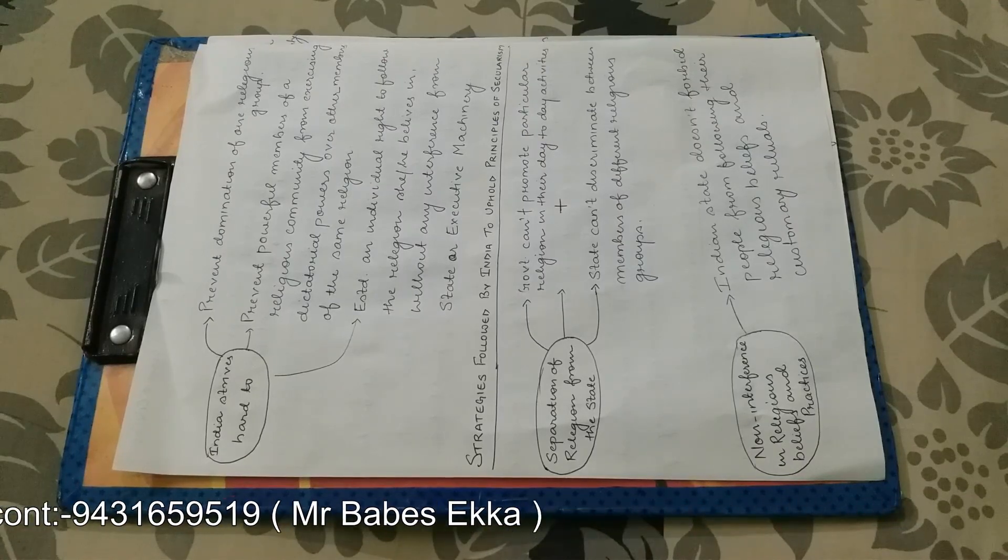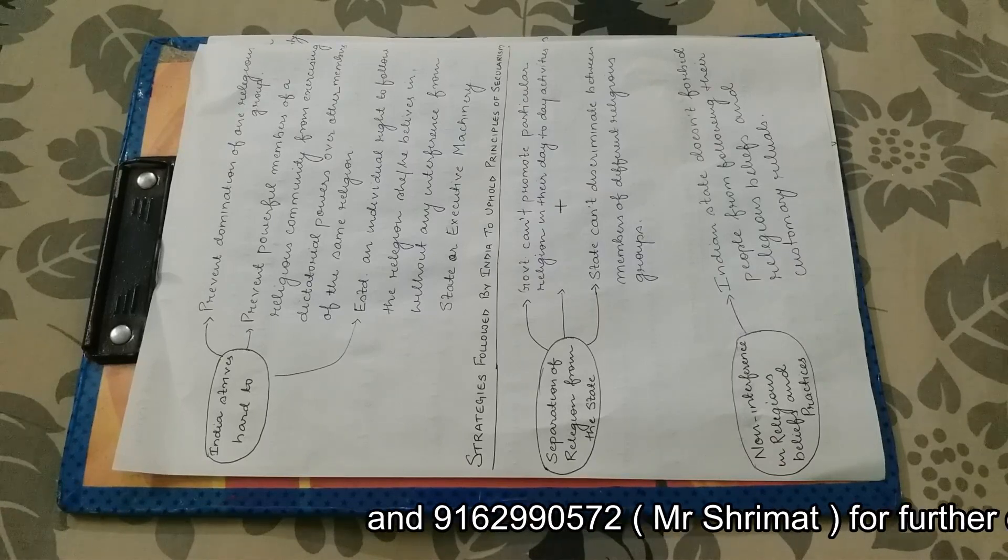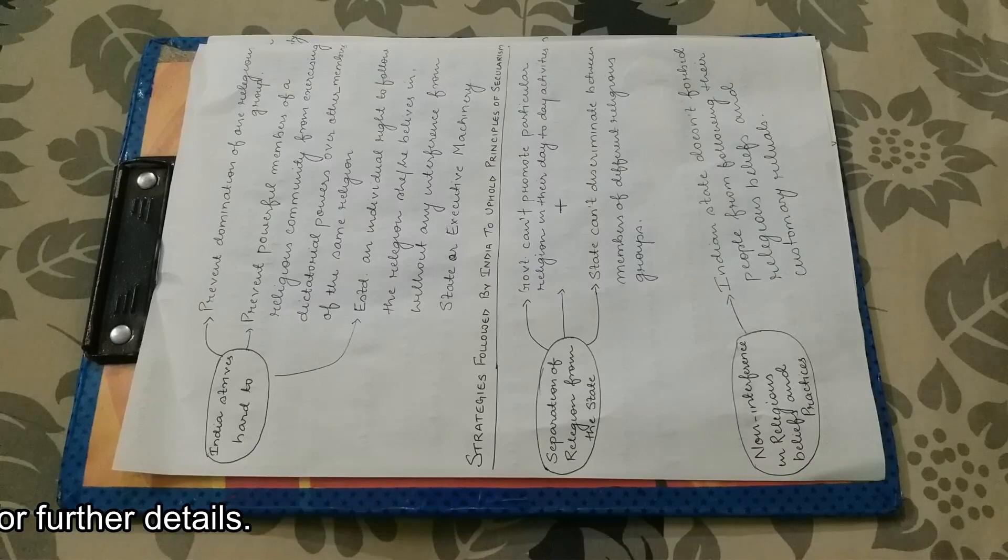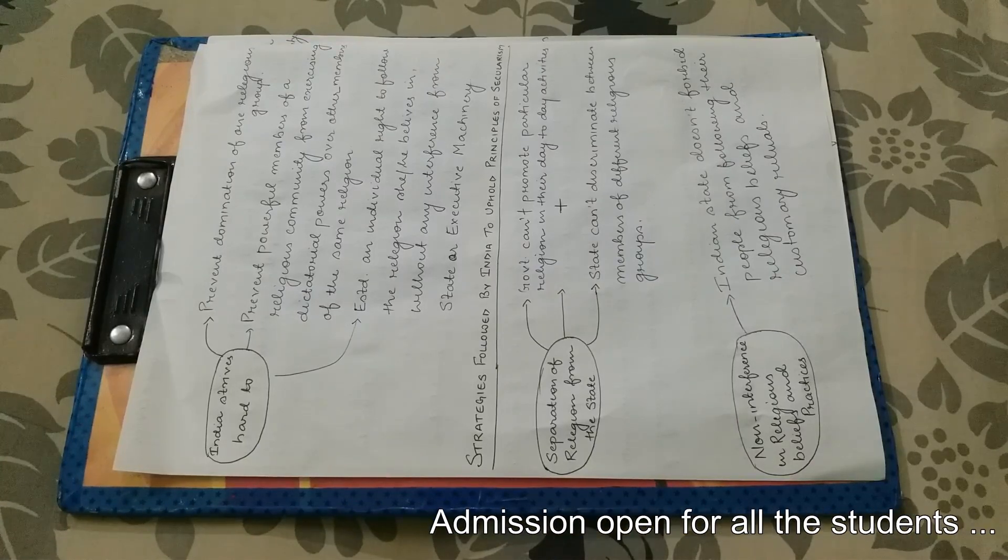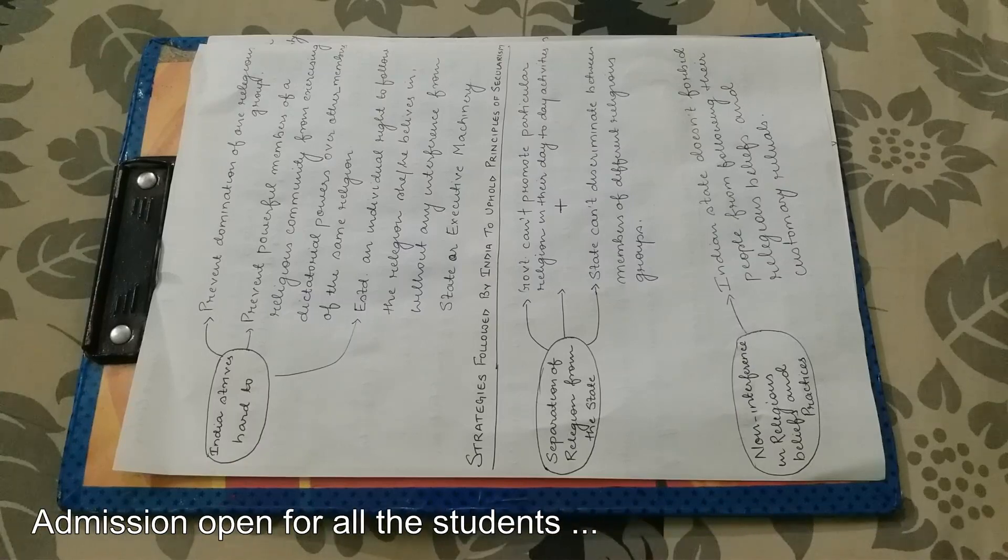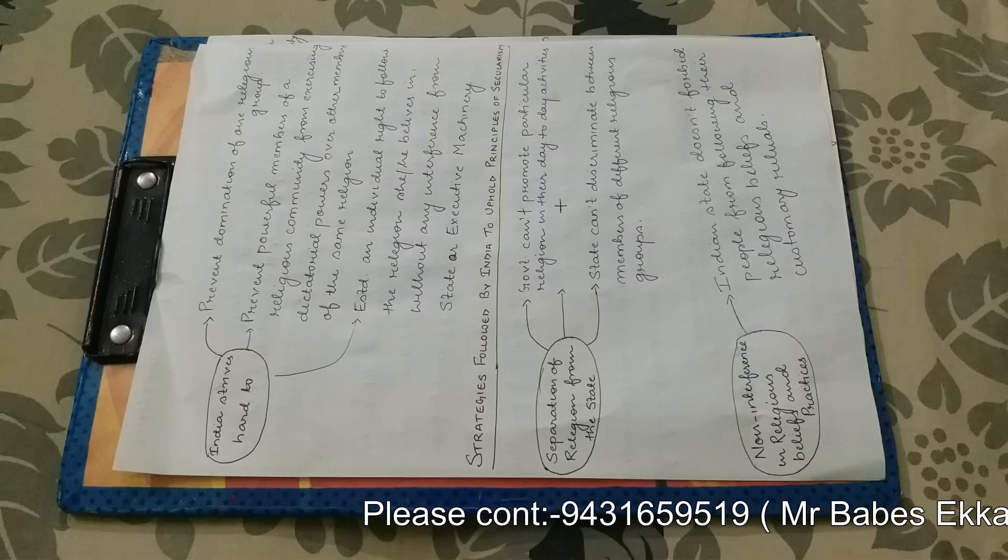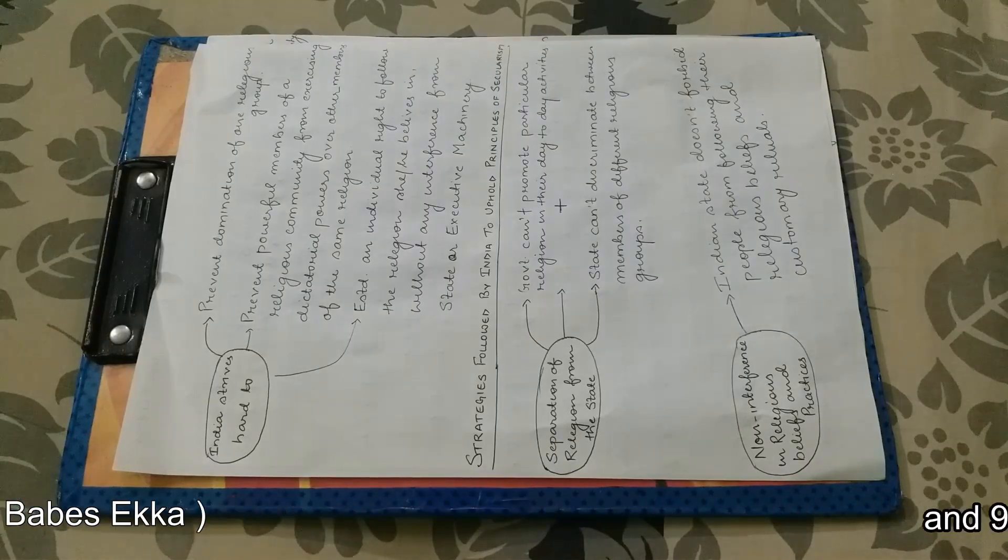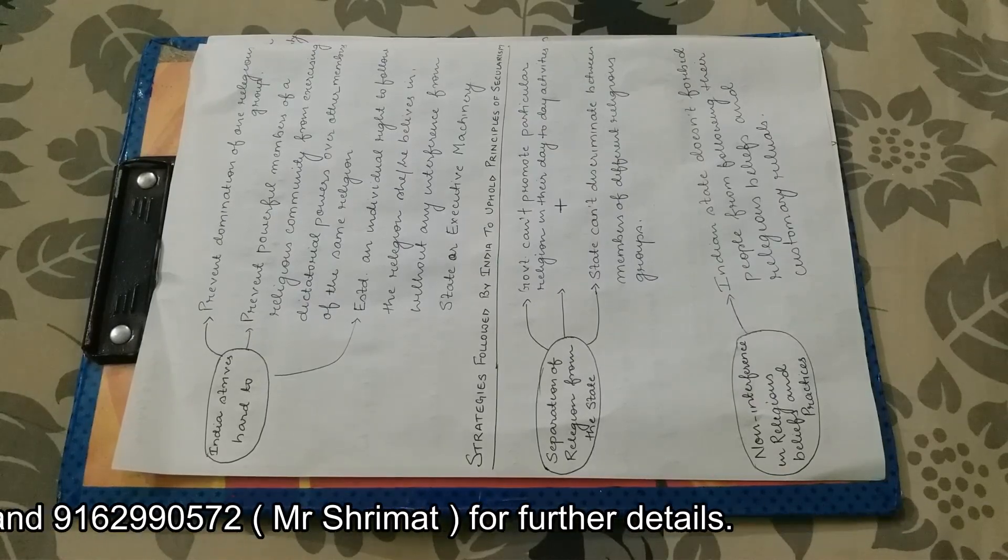Now the second point: non-interference in religious beliefs and practices. That means there is no interference in religious beliefs and practices. Indian state does not forbid people from following their religious beliefs and customary rituals. It means that the state does not stop people from following their religious beliefs and customary rituals. Indian government does not interfere.